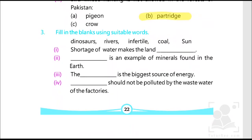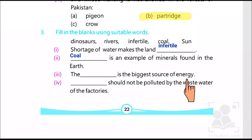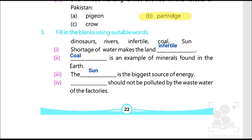Next we have blanks to be filled in. The words given are: dinosaurs, rivers, infertile, coal and sun. Shortage of water makes the land infertile. Coal is an example of minerals found in the earth. The sun is the biggest source of energy. Rivers should not be polluted by wastewater of the factories.